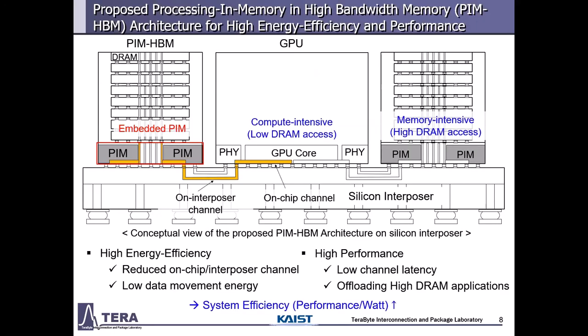This research proposes a PIM architecture based on HBM. The main concept is to embed the processing unit into the logic die of HBM. There are two types of cores: the PIM core embedded in HBM, and the GP core in the processor. Host cores access DRAM through long on-chip channels and interposer channels, but PIM cores access through only a short on-chip channel. By reducing the interconnection length, PIM cores consume not only lower data movement energy but also lower latency than GPU cores. Therefore, by offloading high DRAM-access applications to PIM, overall system efficiency can be improved.